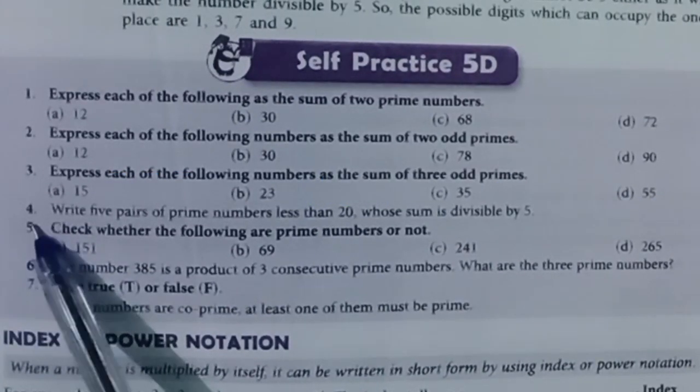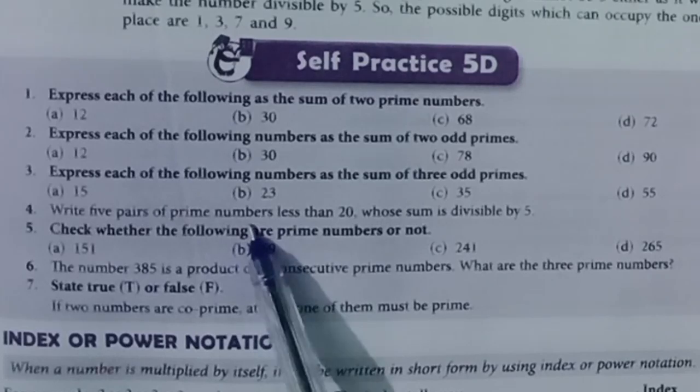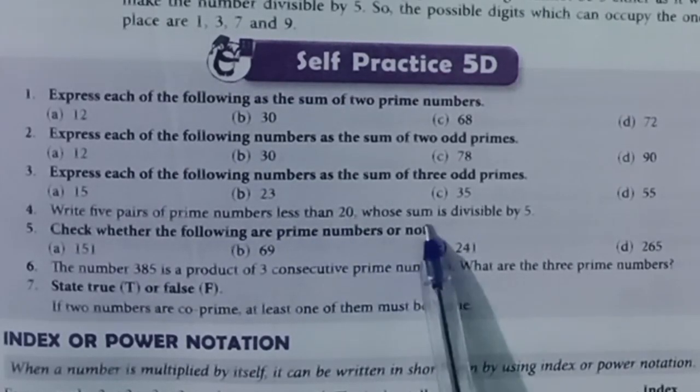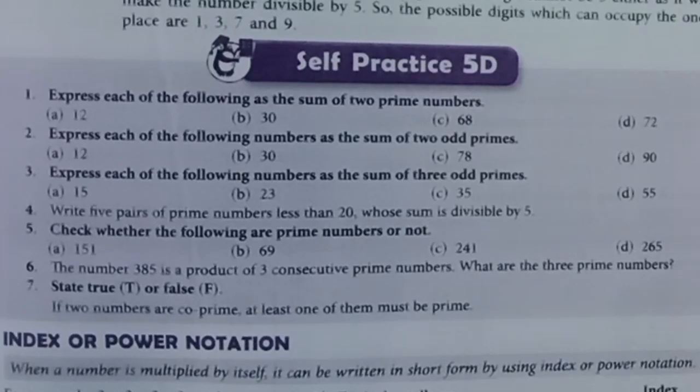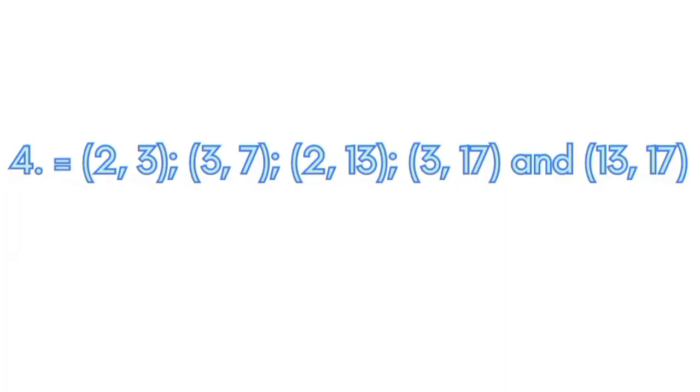Question 4: Write 5 pairs of prime numbers less than 20 whose sum is divisible by 5.